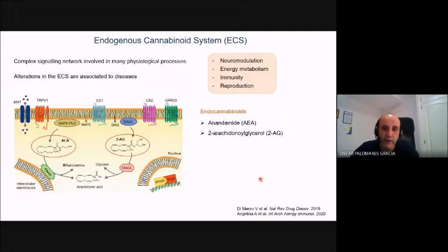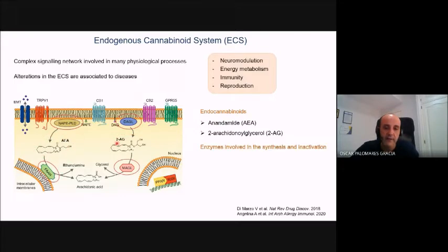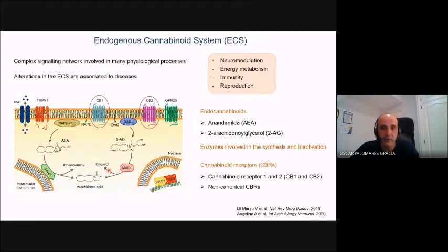The main components of the endocannabinoid system include the endocannabinoid ligands, such as anandamide or 2-AG, the enzymes related to their synthesis and degradation, and also the cannabinoid receptors, the canonical CB1 and CB2, but also other non-canonical cannabinoid receptors.